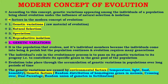Now, the modern concept of evolution. According to this concept, genetic variations appearing among individuals of a population bring about evolution under the influence of natural selection and isolation. There are four factors in the modern concept of evolution: number one, genetic variation; number two, natural selection; number three, speciation; and number four, reproductive isolation.